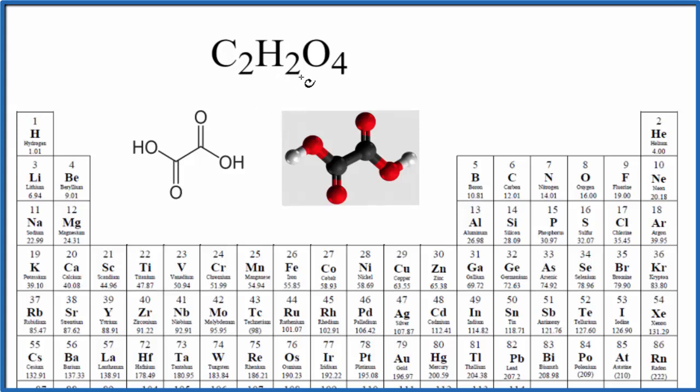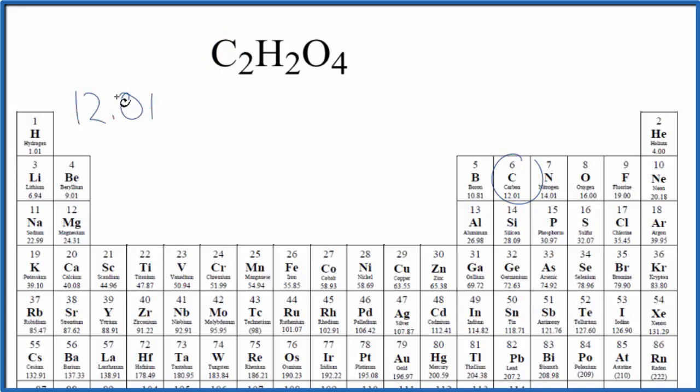So let's find the molar mass for C2H2O4. Carbon on the periodic table, carbon is 12.01 grams per mole. I won't write grams per mole each time. Let's do that at the end. We have two carbon atoms so we're going to multiply that by two.